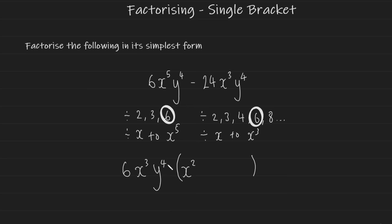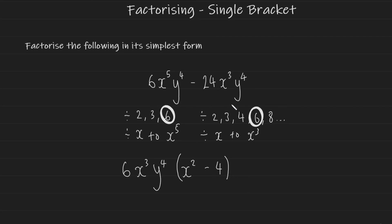Now constructing the bracket: 6 divided by 6 is 1 — hold off writing it until we check for a variable. x⁵ divided by x³ is x² (subtract powers: 5 minus 3). y⁴ divided by y⁴ is 1, so the first term is just x². For the right term: 24 divided by 6 is 4, x³ divided by x³ is 1, y⁴ divided by y⁴ is 1, giving just 4. So the factorized form is 6x³y⁴(x² − 4). Thank you for watching — if you have any questions leave them in the comments below.